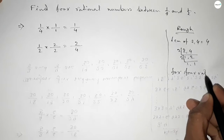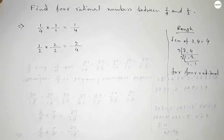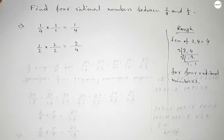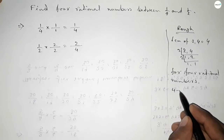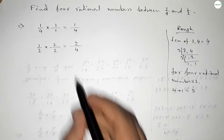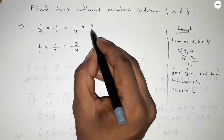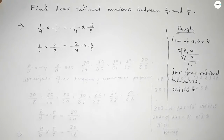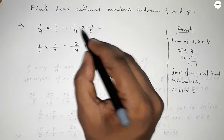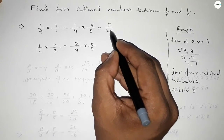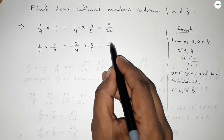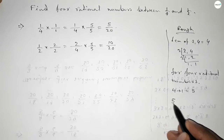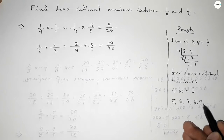We should follow a method: we should multiply four plus one, equal to five, with both numbers — up and down — by this way. So this gives us five over twenty and ten over twenty.